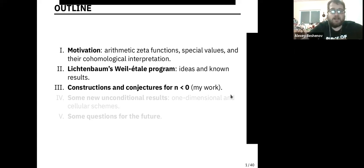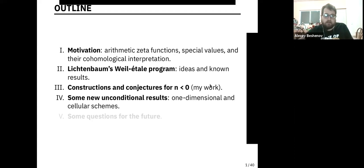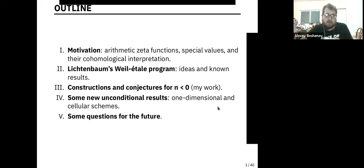Here I'm going to concentrate on my work — not because of not being modest, but just to fix some notation. In some sense, this case of negative integers is easier than the case of arbitrary special values, so I'm going to focus on this one. Then I'm going to present some unconditional results. Basically, in my work I developed some formalism that allows us to formally deduce new cases which were previously unknown. I will explain how to do that for one-dimensional schemes and for cellular schemes. Then I will make some comments about open questions that I still have in my research.